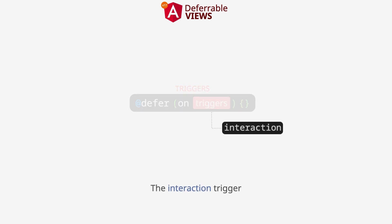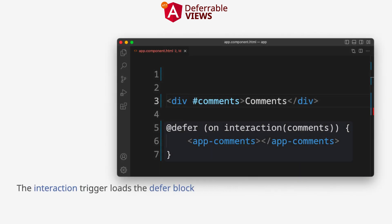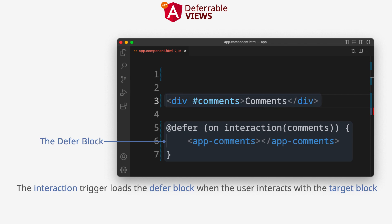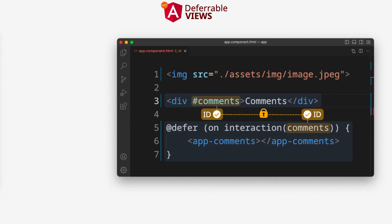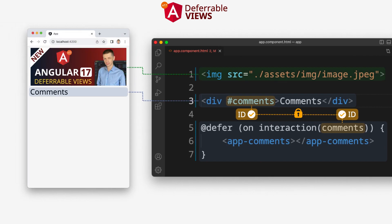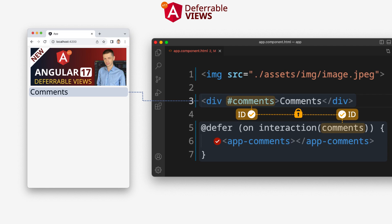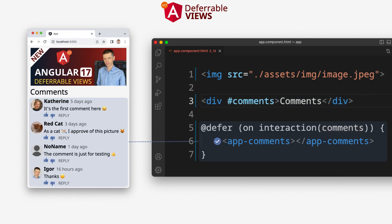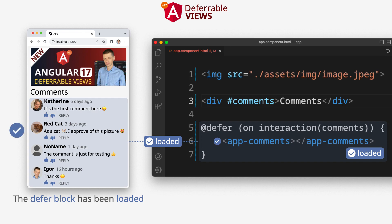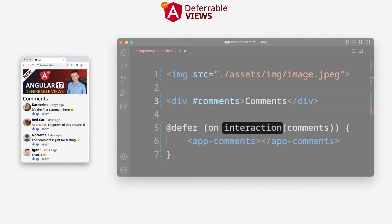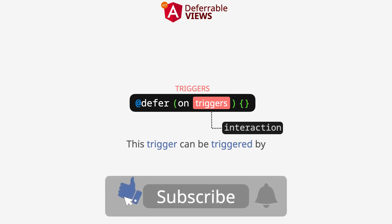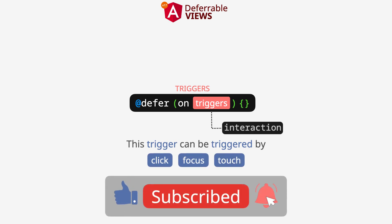The interaction trigger loads the defer block when the user interacts with the target block. For example, click on the target block — the defer block has been loaded. This trigger can be triggered by click, focus, touch, and input events.